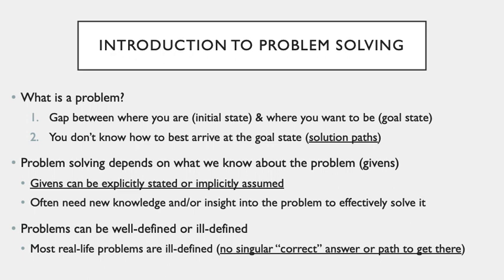Problems can be differentiated between well-defined and ill-defined problems. A well-defined problem is one that has one correct answer and at least one correct path to get there. All multiple choice tests are examples of well-defined problems. An ill-defined problem refers to problems where there are multiple correct answers and/or multiple paths to getting to that goal state. One of the issues with ill-defined problems is that it's hard to determine if the problem has been successfully solved, or if there are strategies that might result in a better solution.